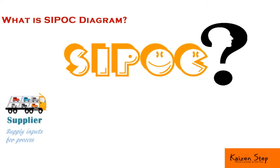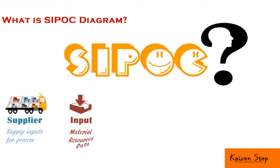The second letter is I, which stands for Input. Inputs are the materials, resources, and data required to run your process.